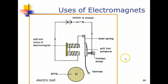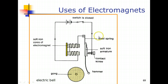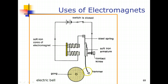The next application is using an electromagnet to ring a bell — an electric bell. It consists of a pair of electromagnet cores, a battery, a switch, a contact screw touching a soft iron armature, and a steel spring connected to the armature. The steel spring allows the soft iron armature to move left and right easily. At the end of the armature is a hammer used to strike the gong.